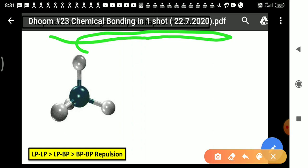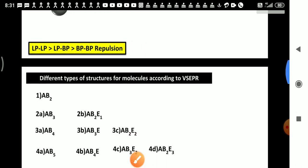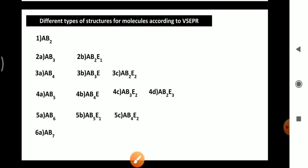To detect the shape, we will learn formulas and how to detect the shape or geometry of any given molecule. Students, pay attention - whenever you want to detect shape or geometry, first of all you should know which is the central atom in that given molecule.